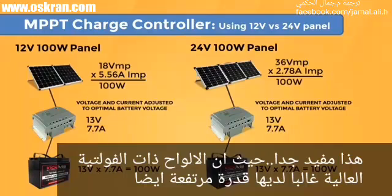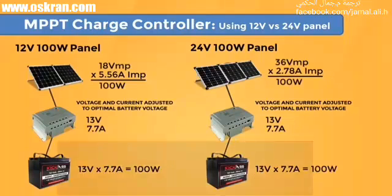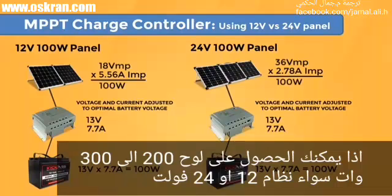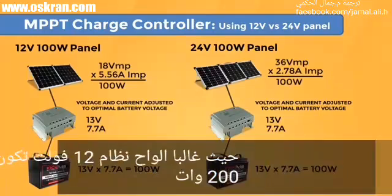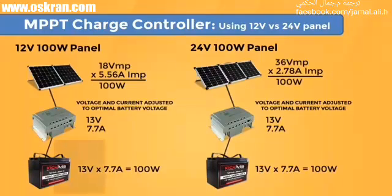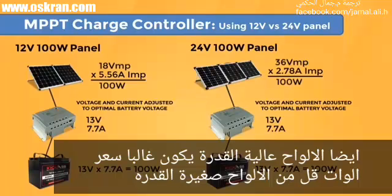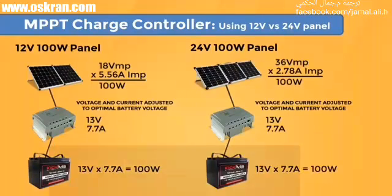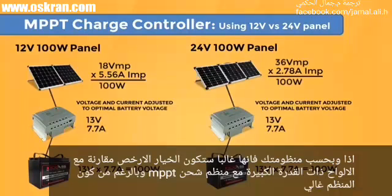This is very useful, as higher voltage panels are usually also higher wattage. You can get panels of 200 to 300 watts in a 20 or 24-volt nominal configuration, whereas 12-volt panels tend to go well under 200 watts. The higher wattage panels are also generally less expensive per watt. So depending on your system, using bigger panels with an MPPT charge controller can often be the less expensive solution overall, even though the charge controller itself is more expensive.